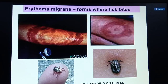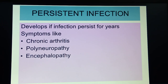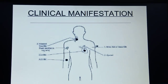Clinical manifestations of Lyme disease include erythema migrans at the site of the tick bite. Disseminated infections cause headache, fever, myalgia, fatigue, and lymphadenopathy — enlargement of lymph nodes. Persistent infections include chronic arthritis, inflammation of bones, polyneuropathy affecting the nervous system, and encephalopathy causing brain damage.